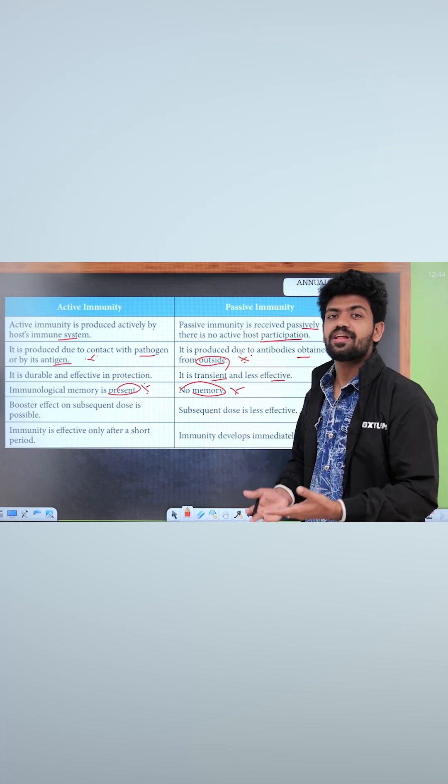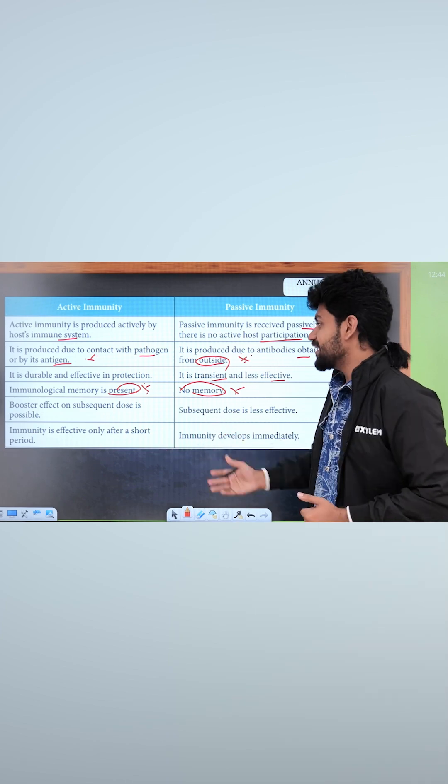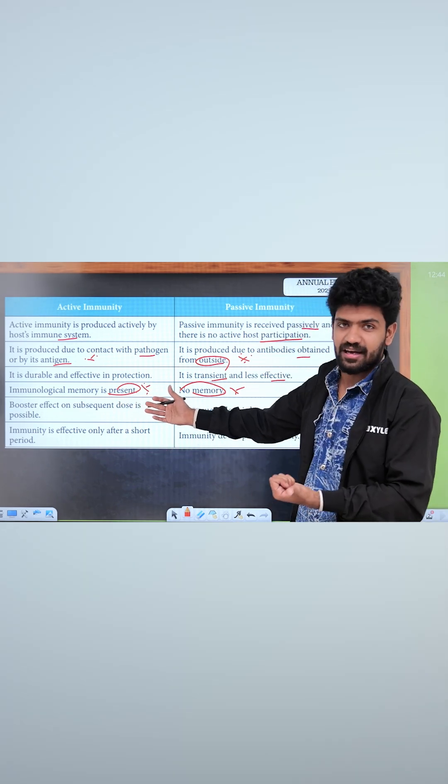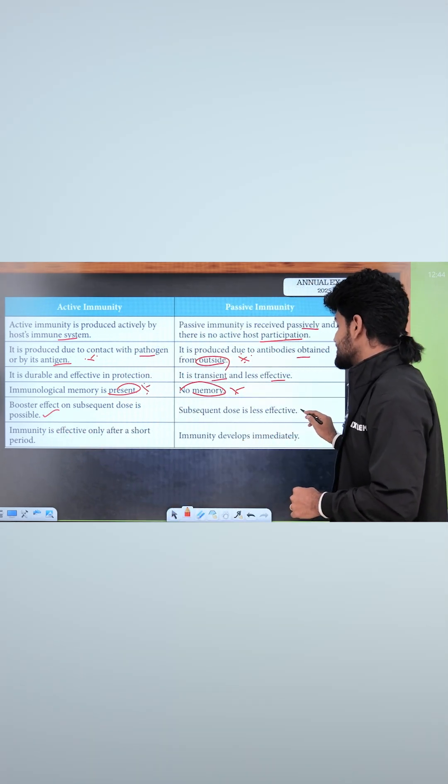If you have an antigen, then there are antibodies. Because they are dead already. Because preformed antibodies are in the body. If you have an antigen, then you can have a booster effect on subsequent doses. Subsequent doses are less effective.